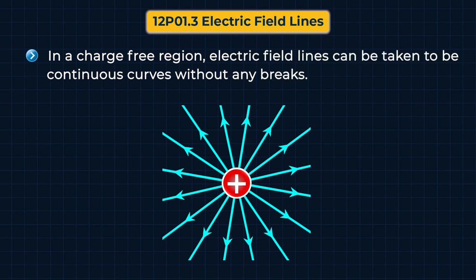The third rule is that in a charge-free region, electric field lines can be taken to be continuous without any break. This is because a charge in an electric field experiences a continuous force, meaning electric field lines are continuous curves with no sudden breaks.